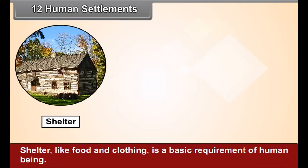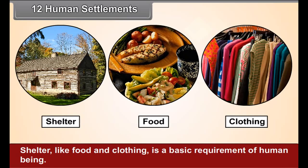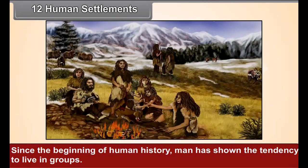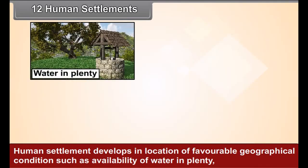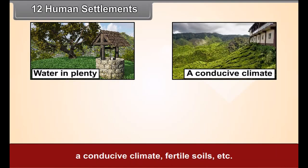Chapter 12: Human Settlements. Shelter, like food and clothing, is a basic requirement of human beings. Since the beginning of human history, man has shown the tendency to live in groups. Human settlements develop in locations of favorable geographical conditions such as availability of water in plenty, a conducive climate, fertile soils, etc.